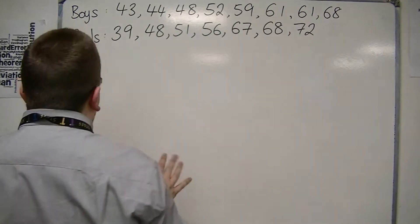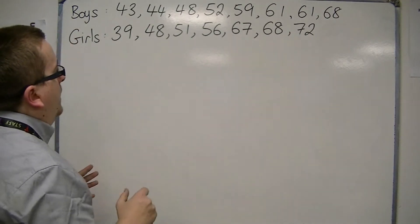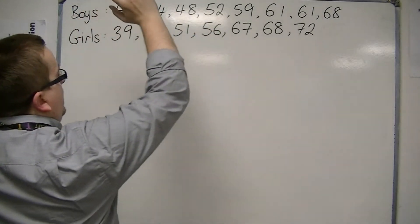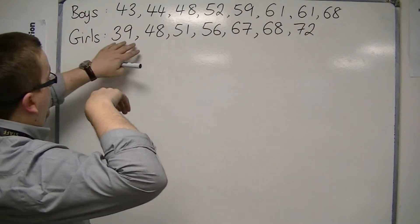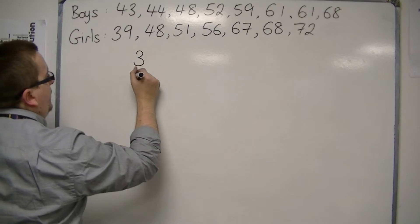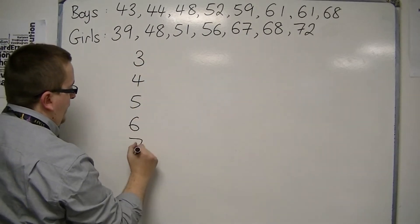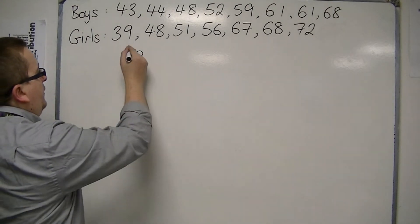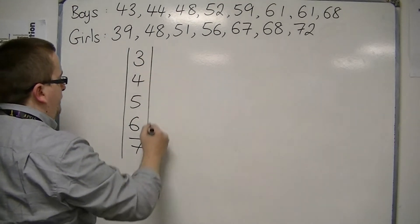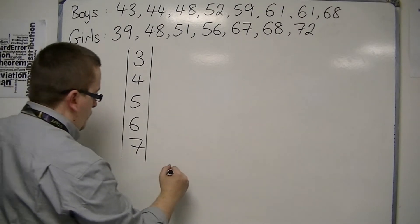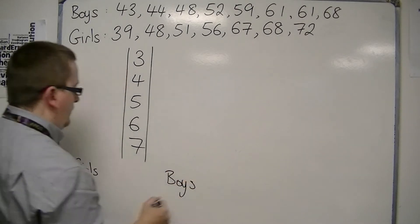So we're going to start off by drawing the back-to-back stem and leaf diagram. So I'm going to look at the data first, and I'm going to think to myself, well, I've got 40s, 50s, 60s, I've got 70s, and I've got 30s. And so, I'm going to start off with 30s, 40s, 50s, 60s, and 70s, so that all ten groups are represented. This is going to be my stem, and I'm going to have the girls on the left and the boys on the right.